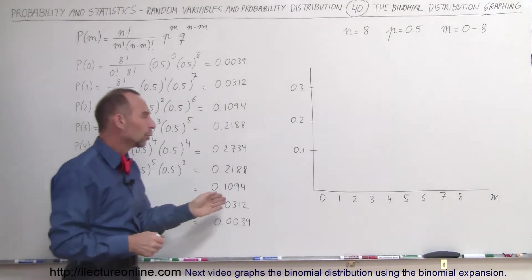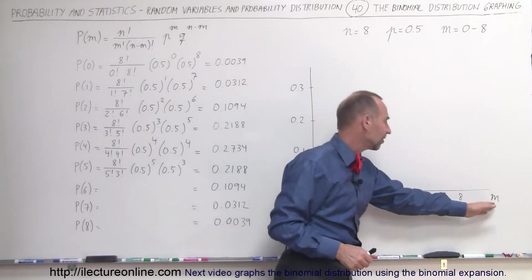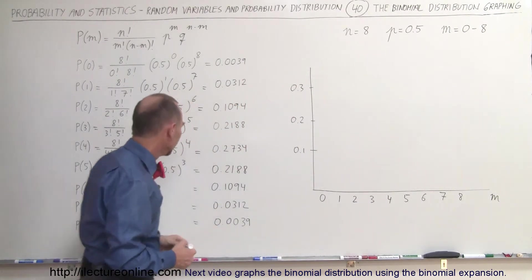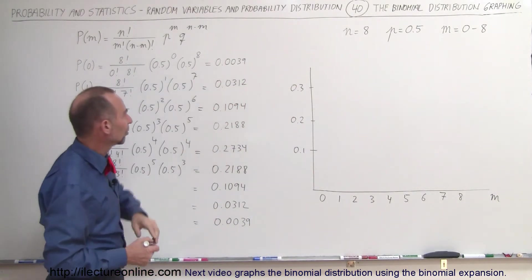So let's go ahead and graph that. The horizontal axis is the number of successes m. The vertical axis is the probability of occurrence. On the first one it's 0.0039, so that would be a very tiny number.